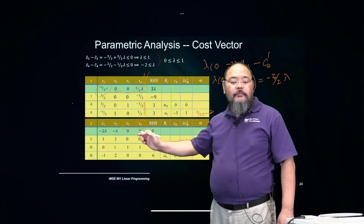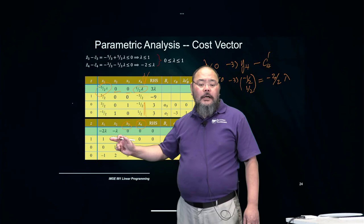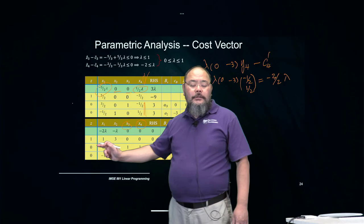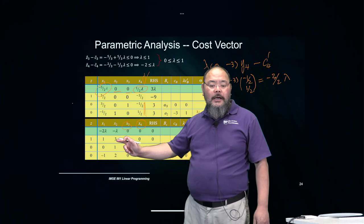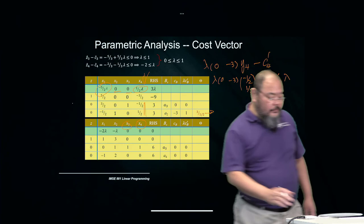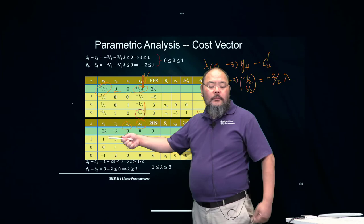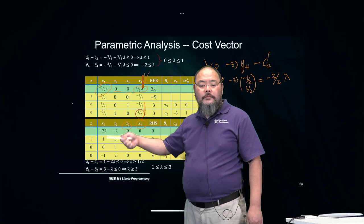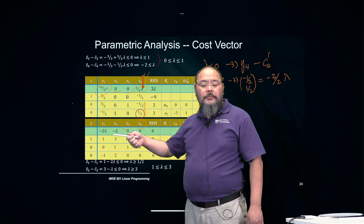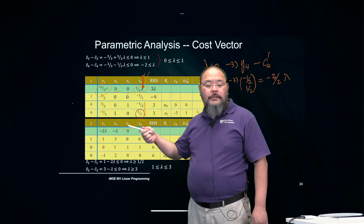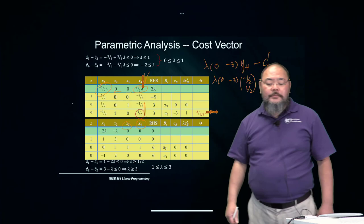Now X3 and X4 are the basic variables, and X1, X2 are non-basic. Looking at Z1 minus C1 and Z2 minus C2: for X1, the tableau becomes non-optimal when lambda exceeds 1/2 (so lambda must be greater than 1 to enter this tableau, and 1 to 3 is the range). For X2, lambda must exceed 3. So between 1 and 3, this second tableau is still optimal.